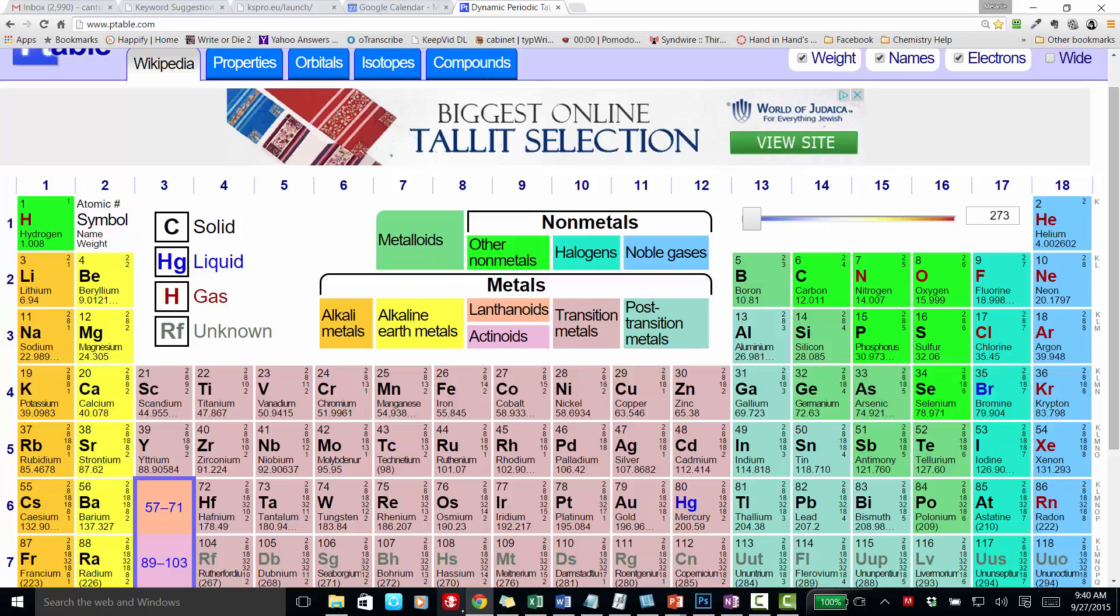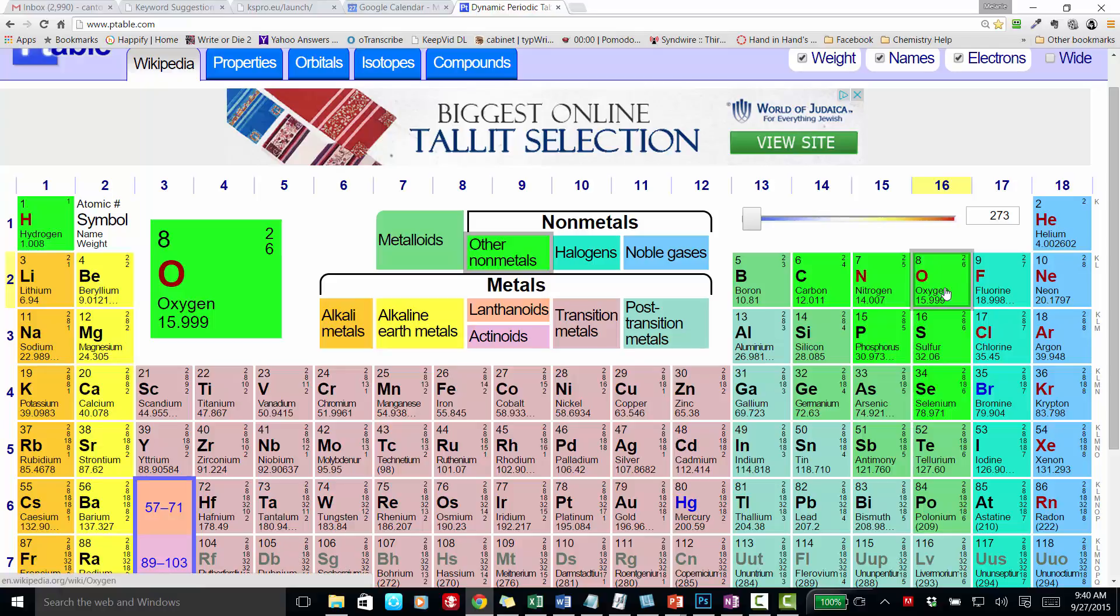Looking at the periodic table, we see that oxygen has eight protons, which also means that a neutral atom of oxygen has eight electrons.